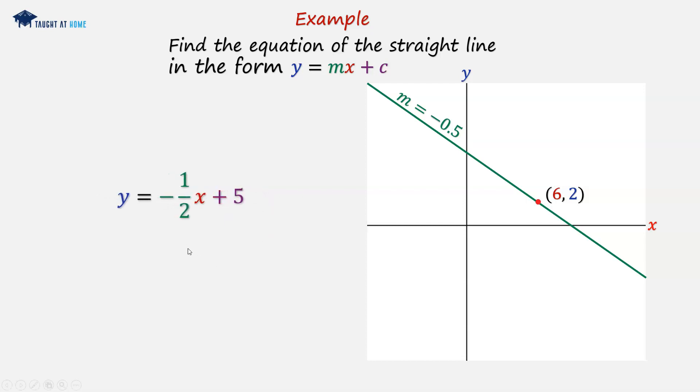And now we've got y equals minus a half x plus 5, which is in the form y equals mx plus c, where m is minus a half and c is positive 5.